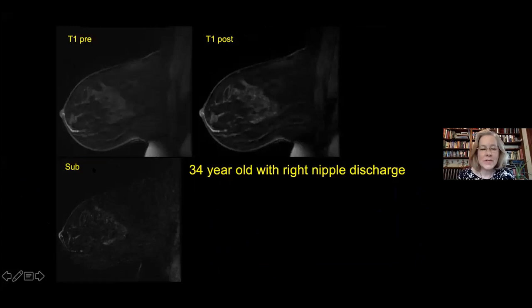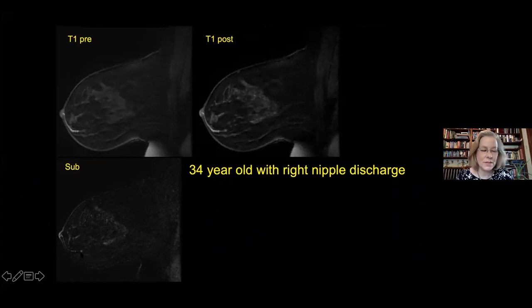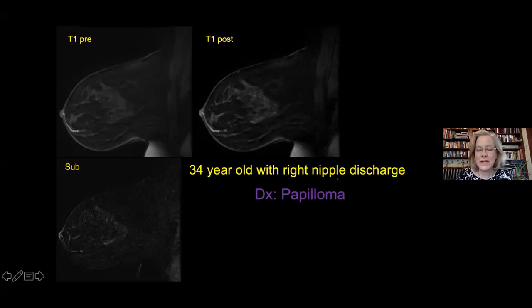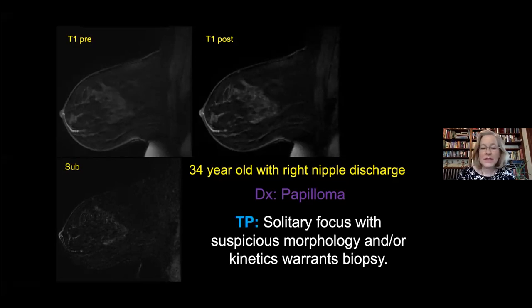A patient had right nipple discharge. On T1 pre-contrast, there's T1 increased signal in a ductal distribution—a duct with bright material, either proteinaceous or hemorrhagic debris. On post-contrast you can still see the T1-bright signal. On subtraction, there's a little focus at the end of that duct. This was biopsied and turned out to be a papilloma—the most likely finding in the setting of nipple discharge. A solitary focus with suspicious morphology or kinetics really should be biopsied.